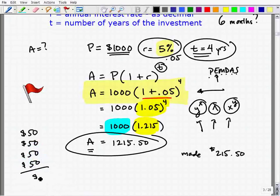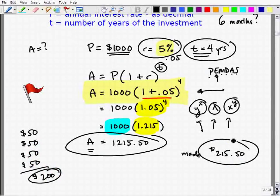So simple interest, we would have made $200. Compound interest, we made $215, but believe me, when you're dealing with larger principal amounts and longer lengths of time, your compound interest account will grow much more dramatically.